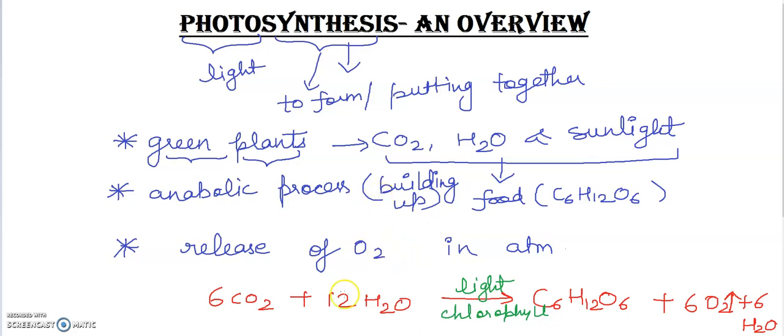Light energy is converted into chemical energy, which is absorbed by the chlorophyll molecules present in leaves. These are the green pigments found especially in green plants, and simple sugars like glucose are formed as a product.